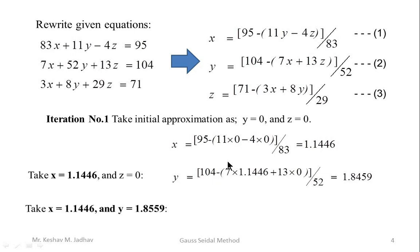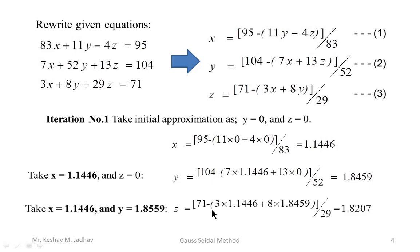To calculate z, we use equation (3). We substitute the updated values x = 1.1446 and y = 1.8459 into equation (3), giving the new value of z = 1.8207.